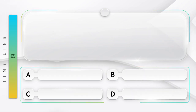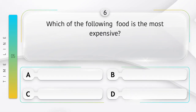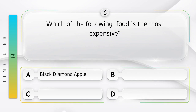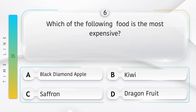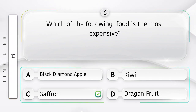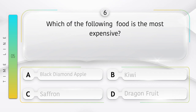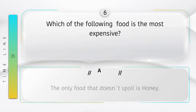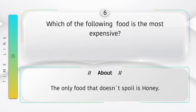Which of the following foods is the most expensive? Option A: Black Diamond Apple, B: Kiwi, C: Saffron, D: Dragon Fruit. Answer is option C, Saffron. Did you know the only food that doesn't spoil is honey?